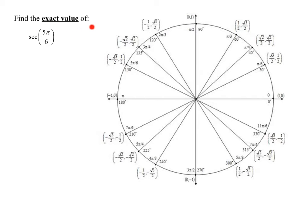In this problem, we're asked to find the exact value of the secant of 5π over 6. So I'm going to use my unit circle here, and here is 5π over 6.